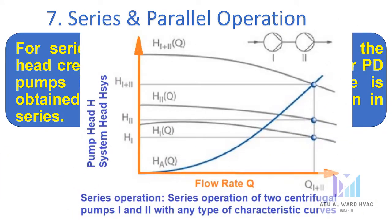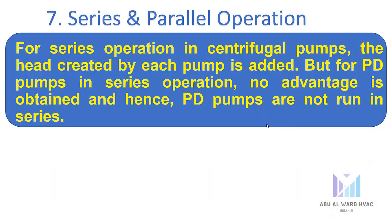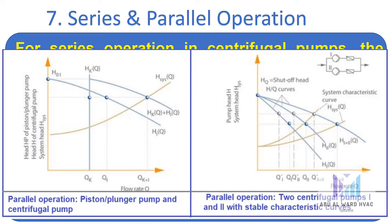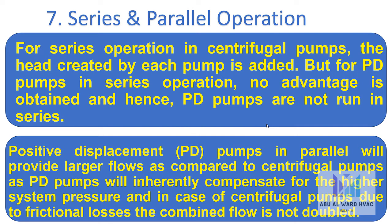For series operation in centrifugal pumps, the head created by each pump is added. For positive displacement pumps in series, no advantage is obtained, so positive displacement pumps are not run in series. In parallel, positive displacement pumps provide larger flows compared to centrifugal pumps, as they inherently compensate for higher system pressure. In centrifugal pumps, due to frictional losses, the combined flow is not doubled.